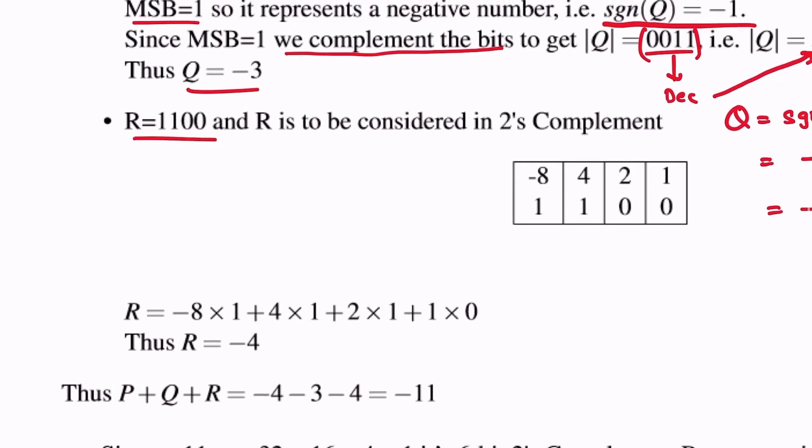Finally, R is also 1100 and is to be considered in the two's complement form.